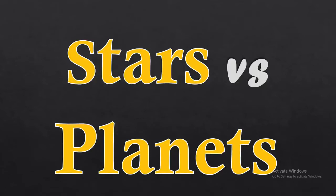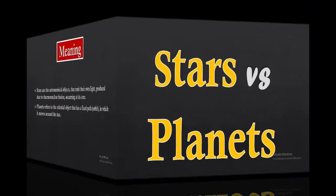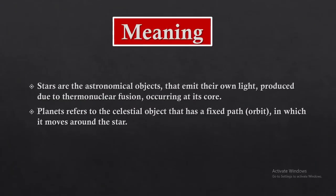Assalamu alaikum, welcome to my channel. In this video we discuss the key differences between stars and planets. The first difference is meaning: stars are astronomical objects that emit their own light, produced due to thermonuclear fusion, and planets refer to celestial objects that have a fixed path in which they move around a star.